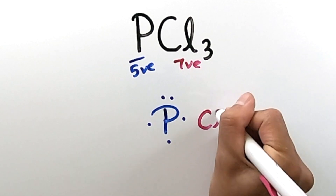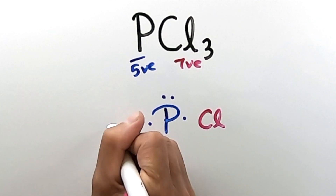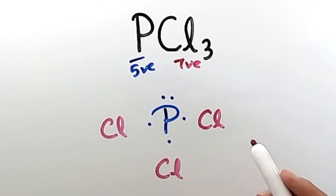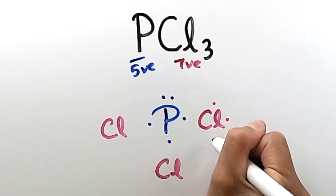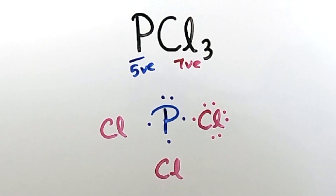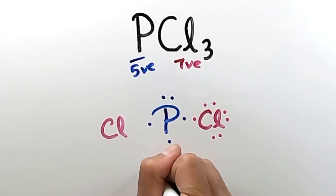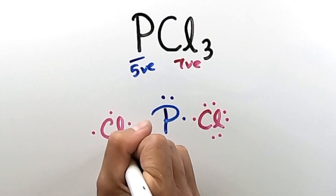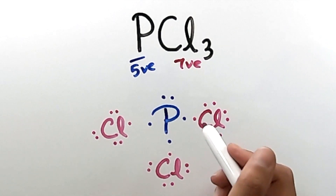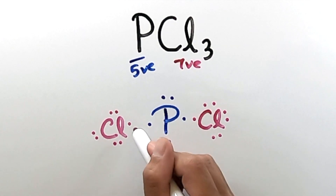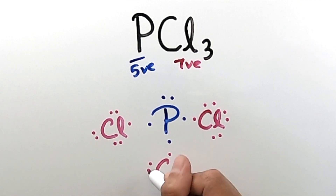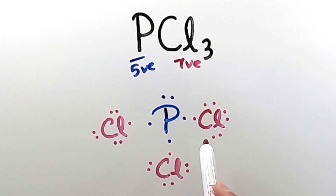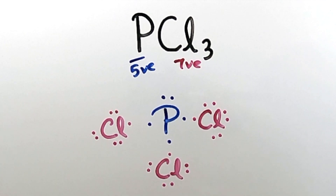I'm going to draw each chlorine atom around the singular electrons, and then draw the seven valence electrons around each of these chlorine atoms — one through seven for each chlorine, three times total. Notice each chlorine atom also has a singular electron and three lone pairs. Again, it's the singular electrons on the chlorine atoms that are most likely going to be used in forming a bond with the phosphorus.